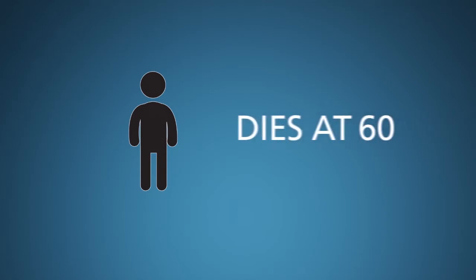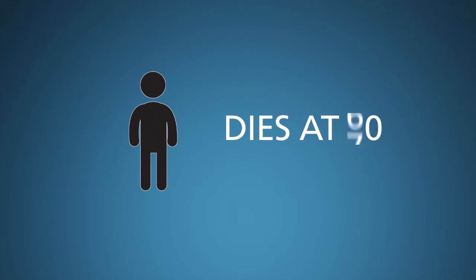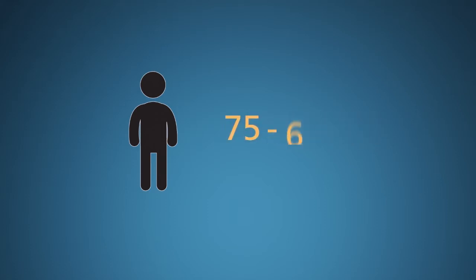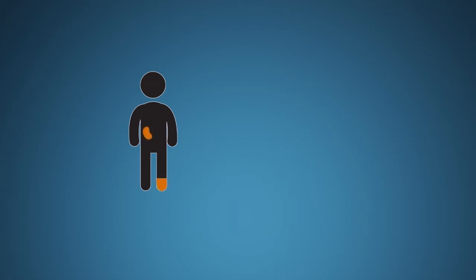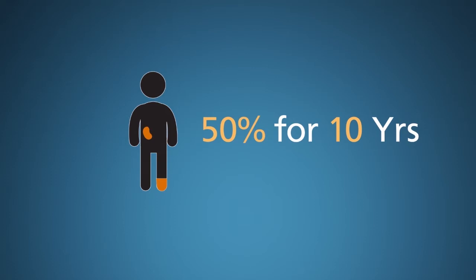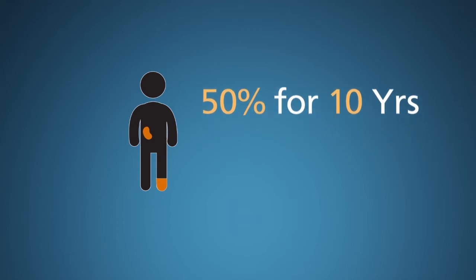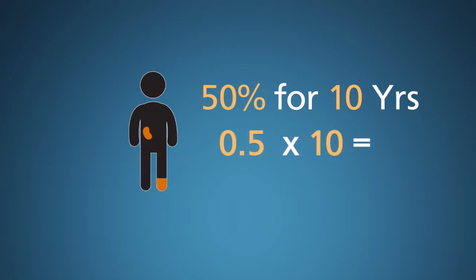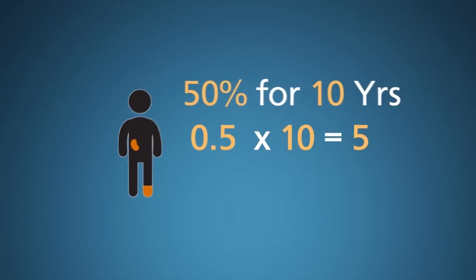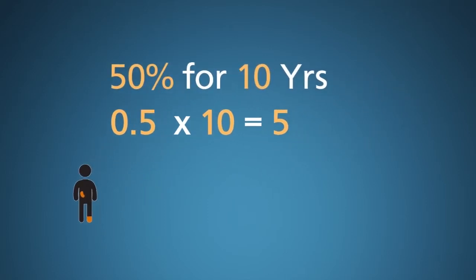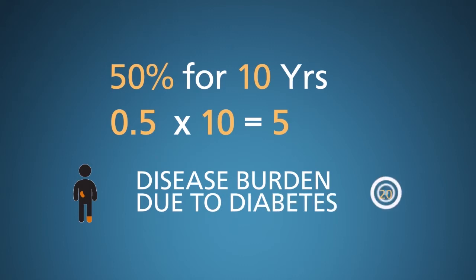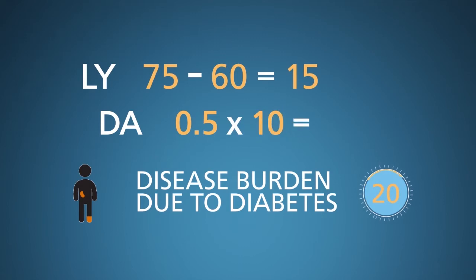Let's look at an example using adult onset diabetes. Let's say an individual dies at 60 years old instead of his life expectancy without diabetes of 75 years. That's 75 minus 60, so 15 DALYs incurred — that's the mortality part of the DALY. Let's also say that the morbidity effects of adult onset diabetes, perhaps foot or kidney complications, rendered this individual 50% disabled for the final 10 years of his life. So, 0.5 times 10 years results in 5 more DALYs. In sum, for this individual, the overall disease burden due to diabetes can be represented as 20 DALYs: 15 for mortality plus 5 for morbidity.